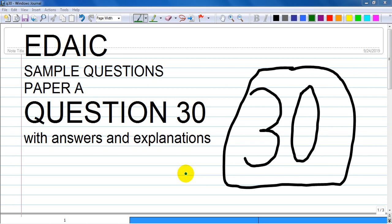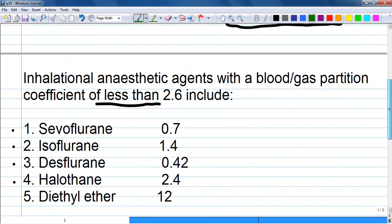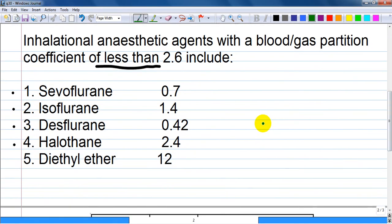We are discussing GEDAIC sample questions, paper A, number 30. Inhalational anesthetic agents with a blood gas partition coefficient of less than 2.6 include the following.